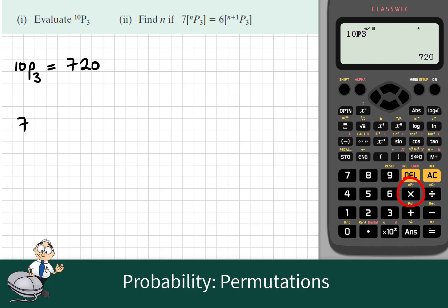In the second question we are asked to find n if 7 times nP3 equals 6 times (n+1)P3. Now nP3 means n by (n-1) by (n-2).